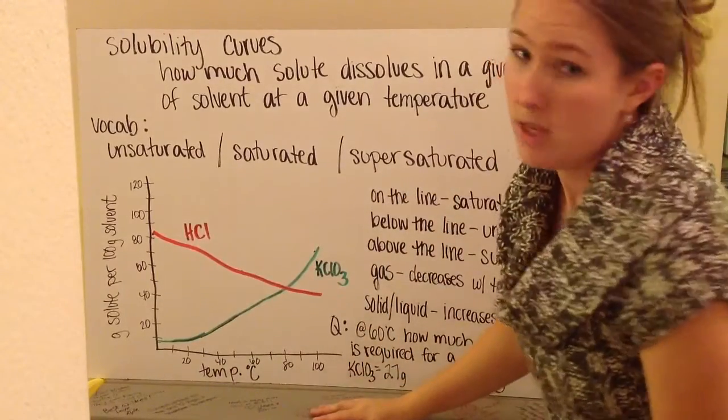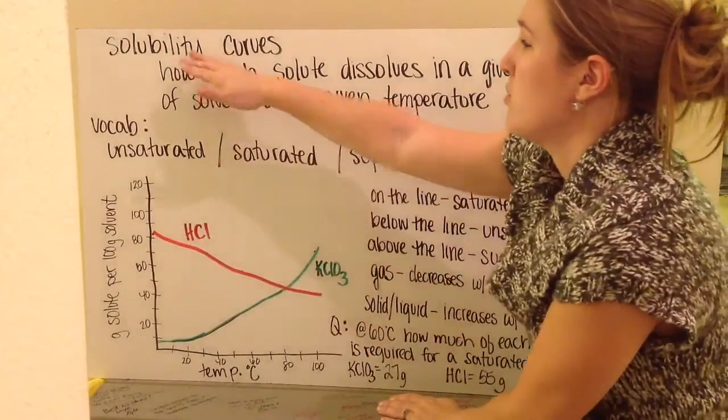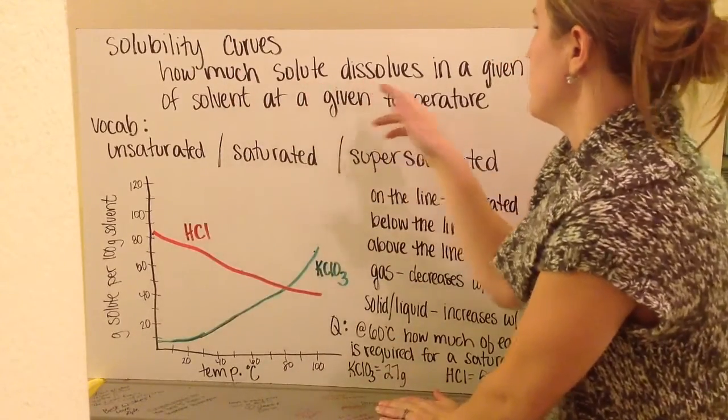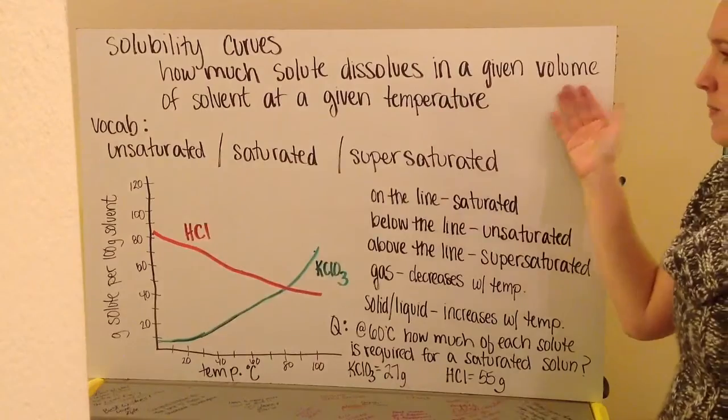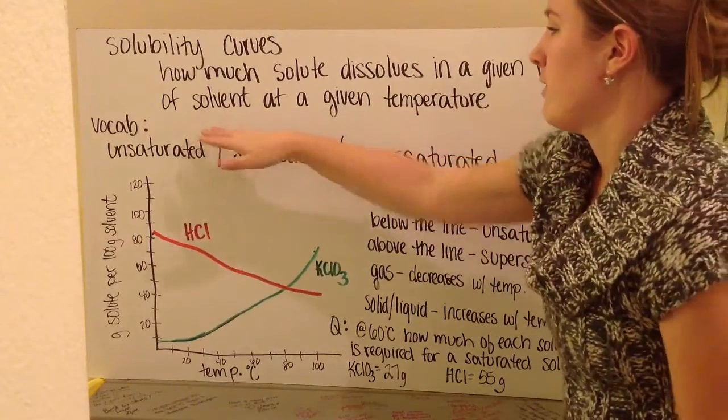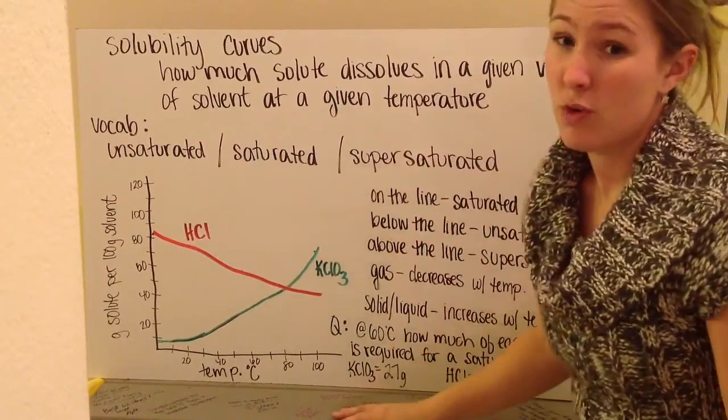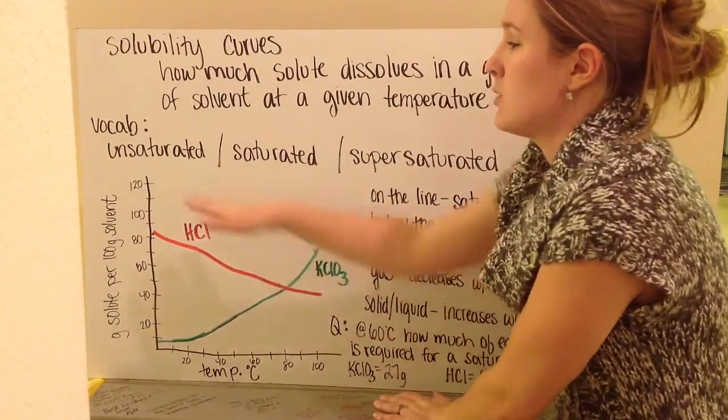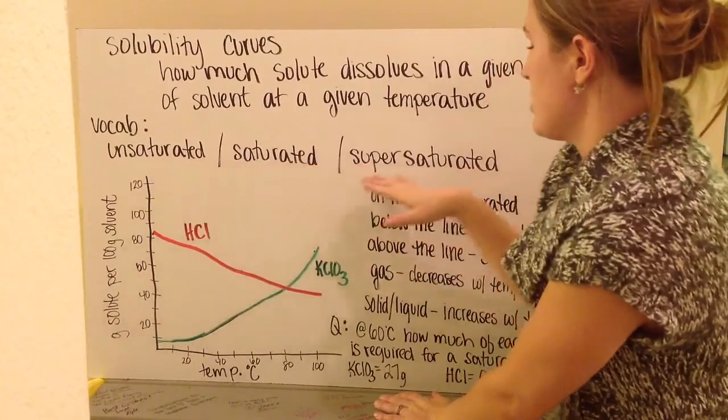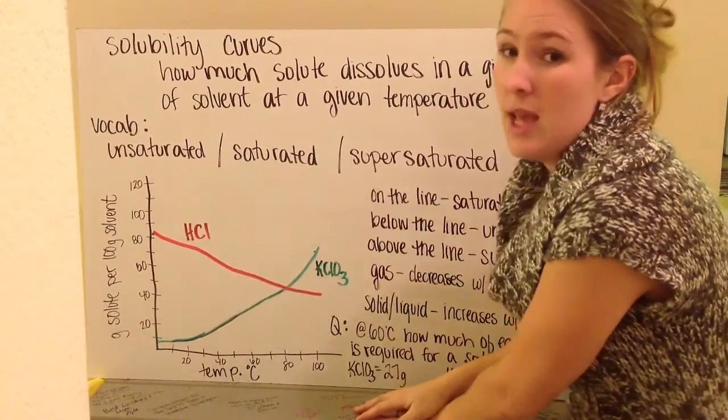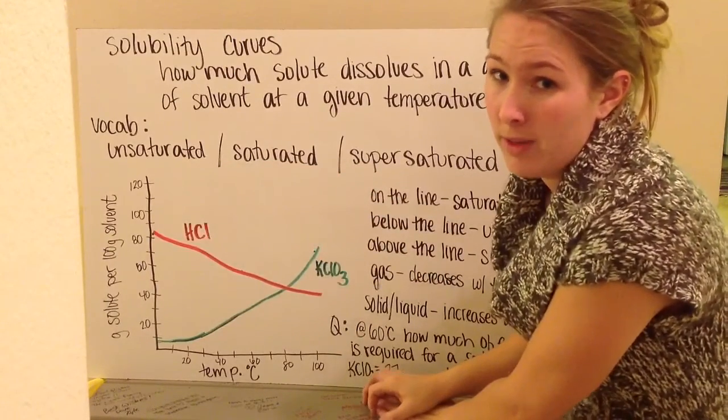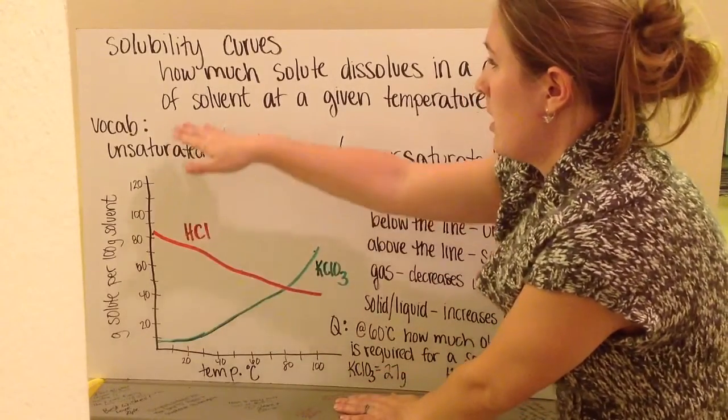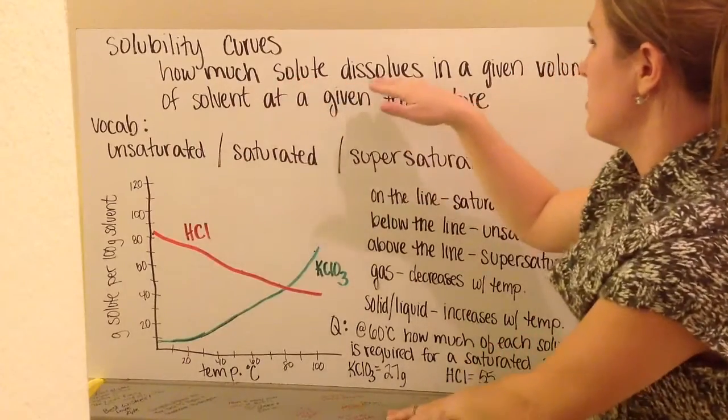We can show solubility of different solutions via solubility curves. And this shows exactly how much solute is dissolved in a given volume, a volume of solvent, at any given temperature. So, we make graphs of this. With these graphs, we're going to be able to distinguish between unsaturated, saturated, and supersaturated solutions. Again, words that were on that vocabulary list that you should have defined.